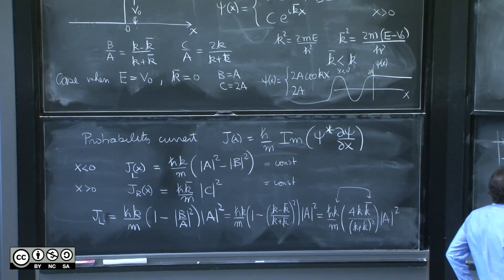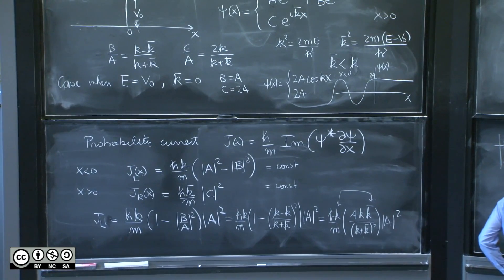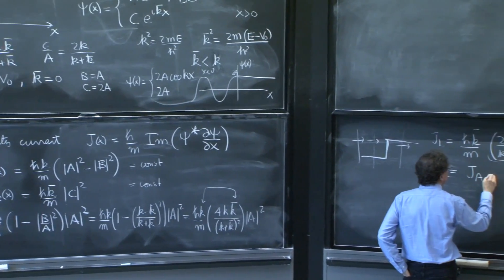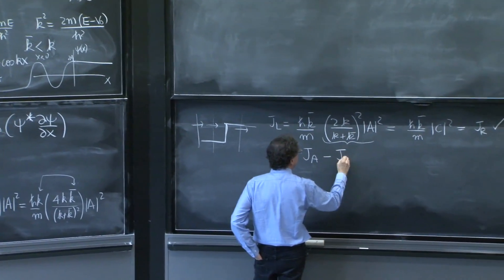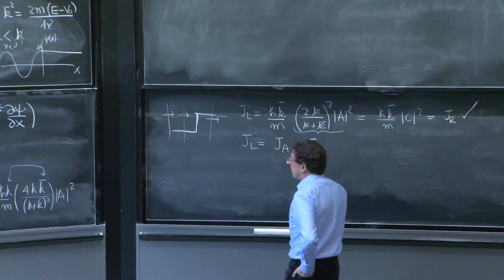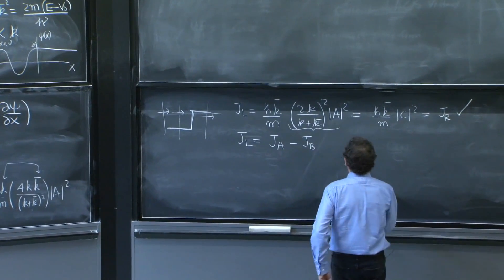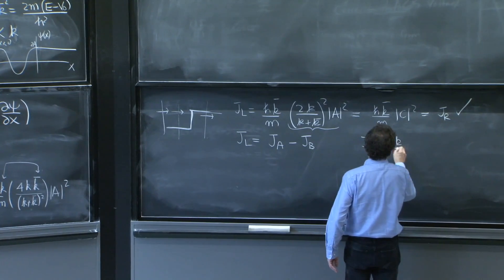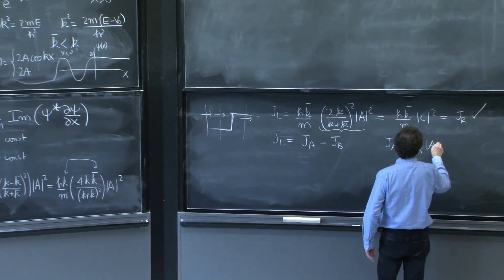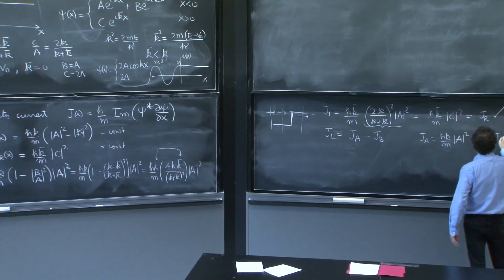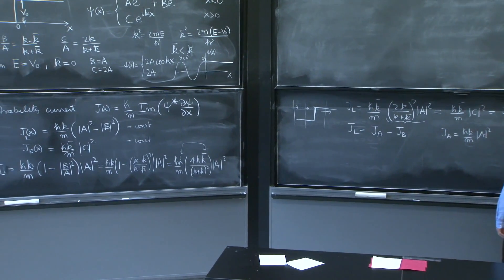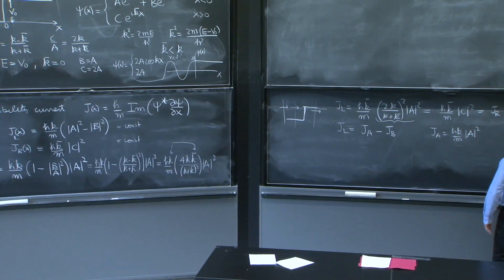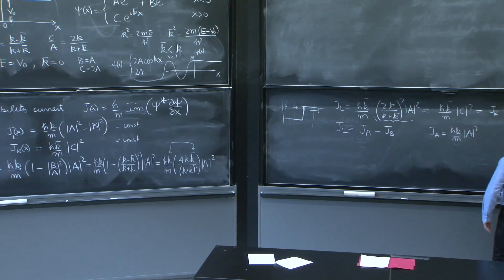We can write, however, j left as j of a minus j of b, where j of a would be h bar k over m a squared, and j of b would be h bar k over m b squared.